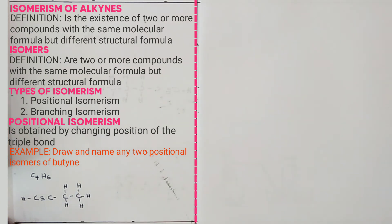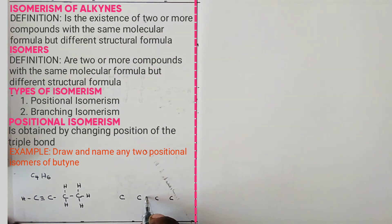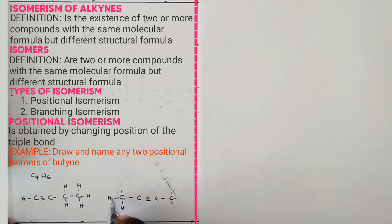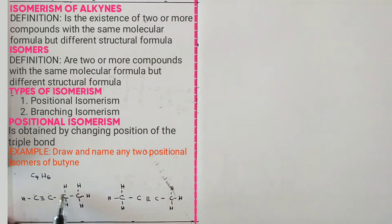To draw the next position isomer, draw 4 carbon atoms and move the triple bond to between carbons 2 and 3. The rest become single bonds; complete the hydrogens so each carbon has 4 bonds. The first isomer is named but-1-yne and the second is named but-2-yne.